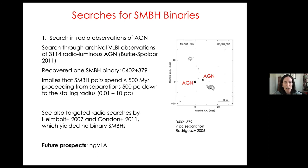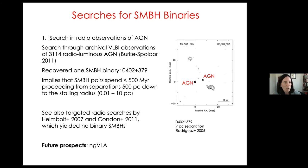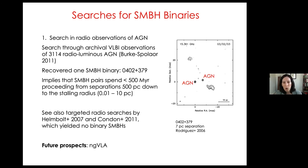Other targeted searches through radio data looking through samples of AGN with bright flat-spectrum radio cores or radio-bright 2MASS galaxies found no additional binary supermassive black holes among over a thousand objects. A more promising future prospect is the ngVLA. With a main array baseline of a thousand kilometers, it would be able to find supermassive black hole binaries at redshifts less than 0.1, growing this catalog beyond the one known system.